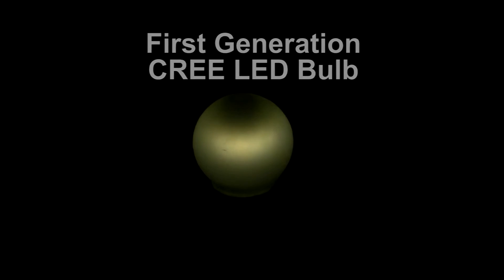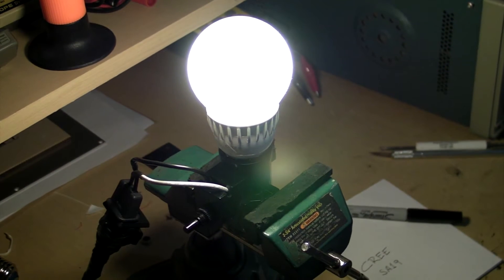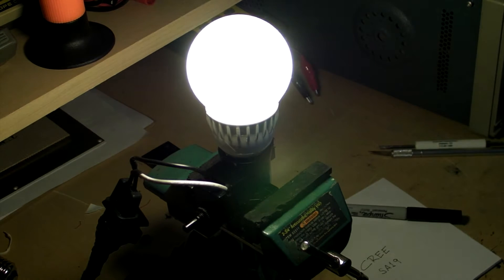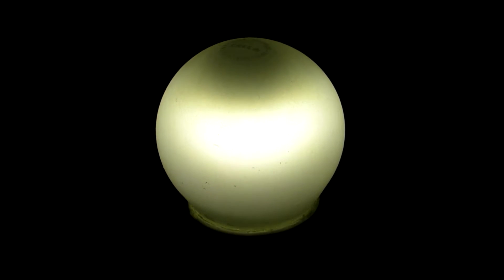And this is an example of the original Cree LED bulb. This one happens to be a 2,700 Kelvin, 60 watt equivalent. And they were always very easy to see where the light source was in them as well. It's a center band. They call it the LED tower. The top of the bulb was always dark.